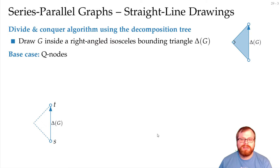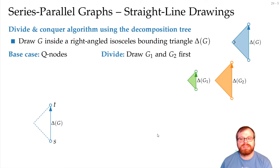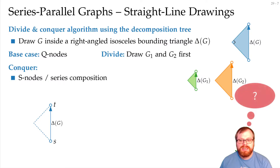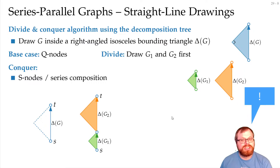In the divide step, no matter if we have a series or a parallel composition, we always sketch two subgraphs and draw those recursively inside right-angled isosceles bounding triangles. In the conquer step, we have to differ between an S node and a P node. Let's do the S node first. We just place these two triangles above each other and then draw a new triangle around those.